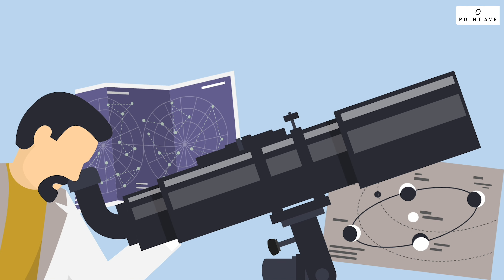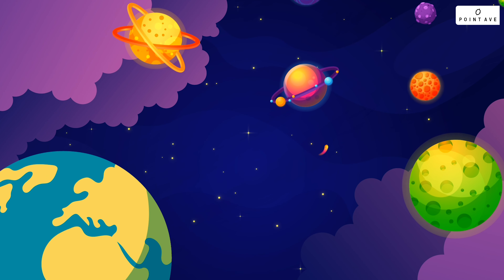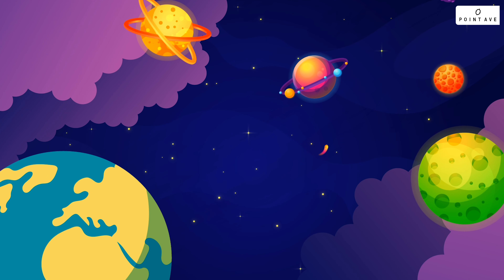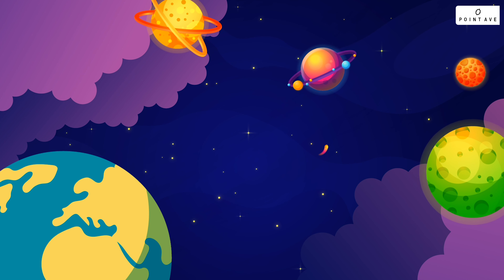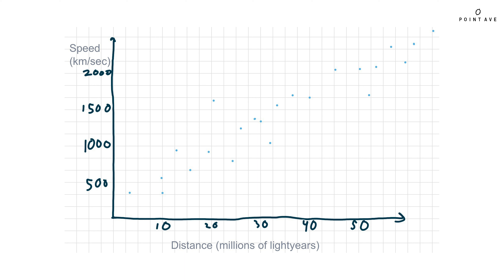In 1929 Edwin Hubble discovered a relationship between the distance of galaxies and the speed at which they move away from our place in the universe, proving that the universe is expanding. His data is displayed in the scatter plot below.